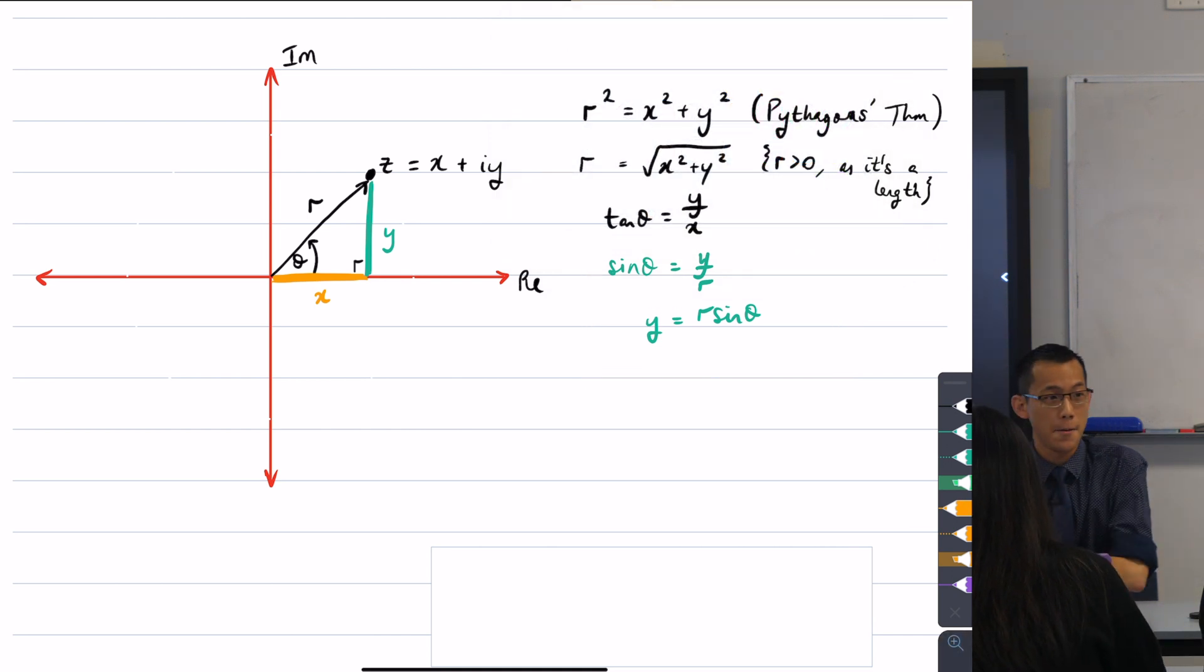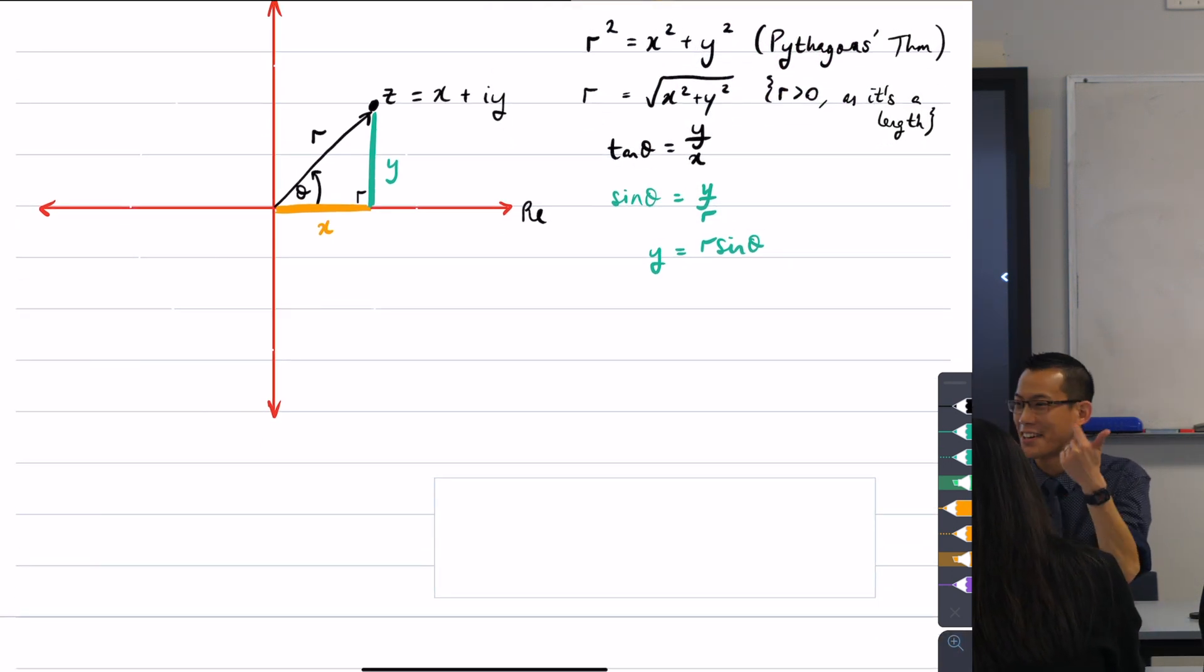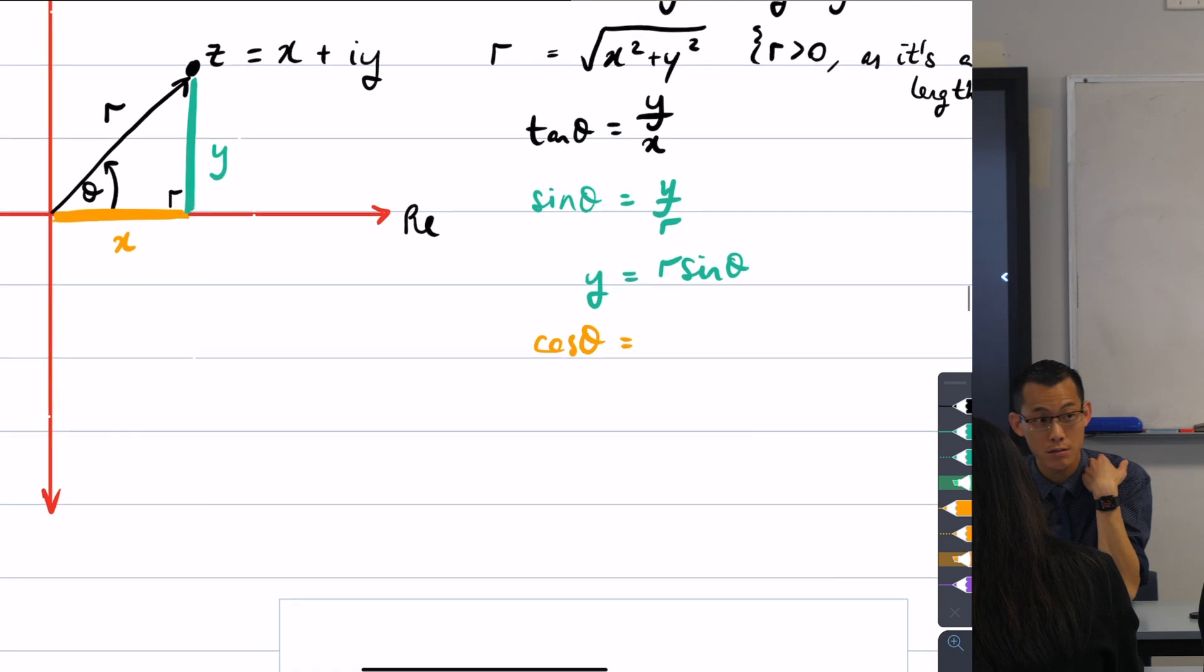And conversely, I can say I've got tan, I've got sine, the last one of course is cos. So cos theta in this right angle triangle is? It's x over r, adjacent over hypotenuse. So therefore I can say x equals r cos theta.